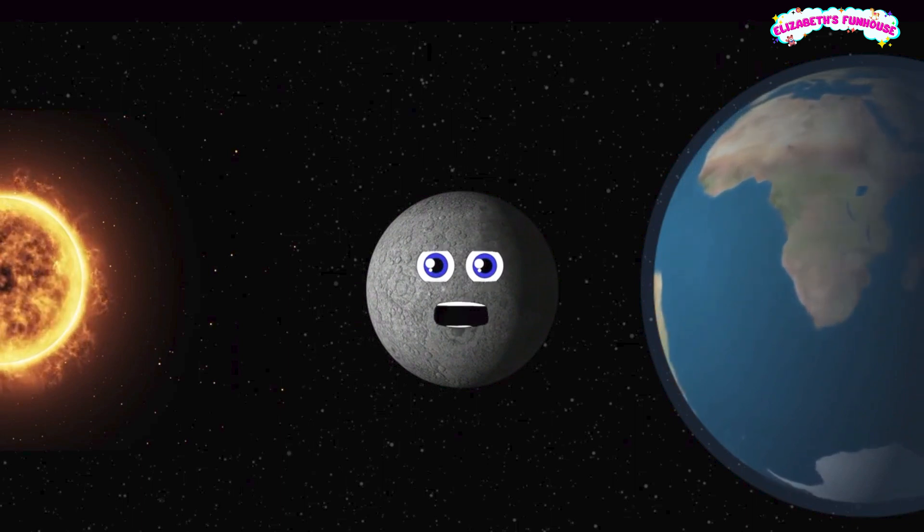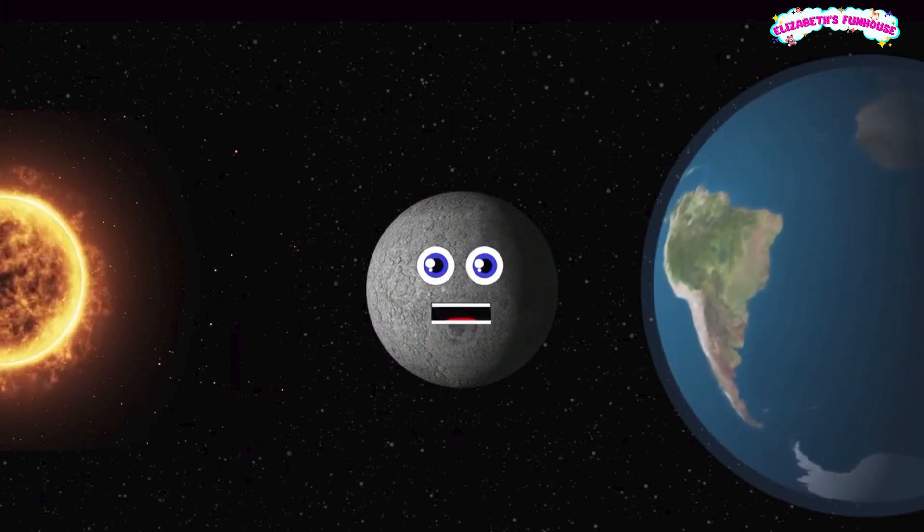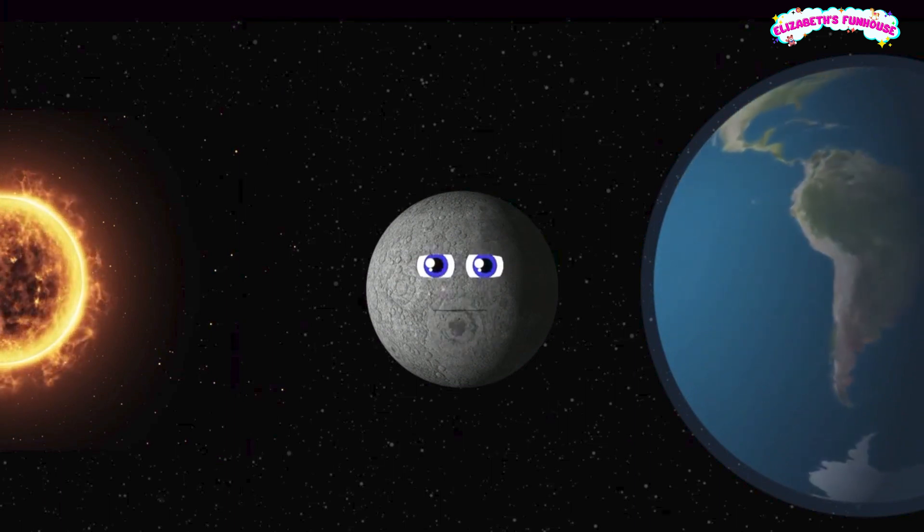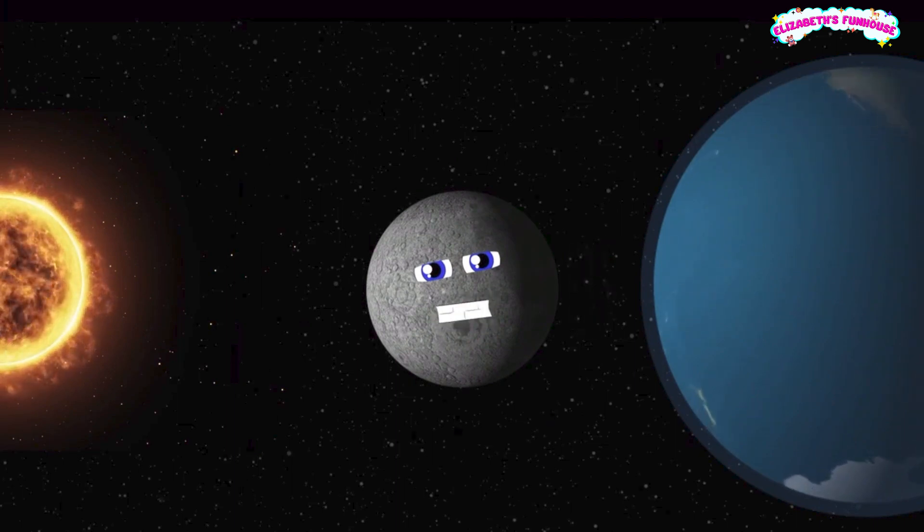You only see one half of my surface, whether it's day or night. When the Earth spins on its axis, ocean levels stay the same. Then the moon's gravitational pull creates the tides that we see change.